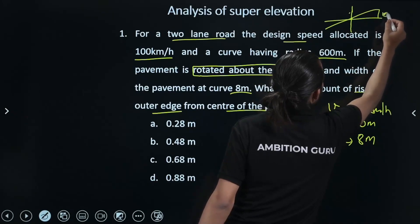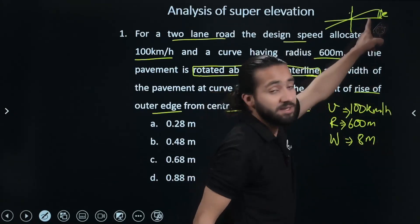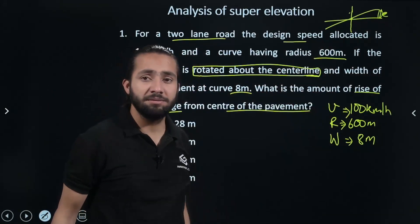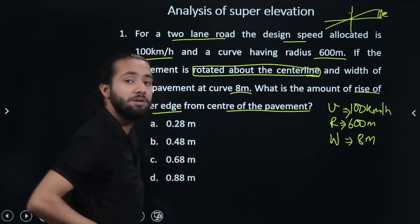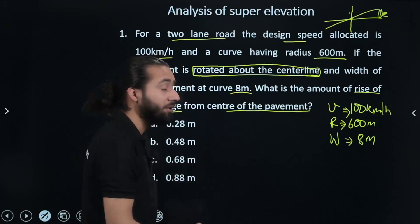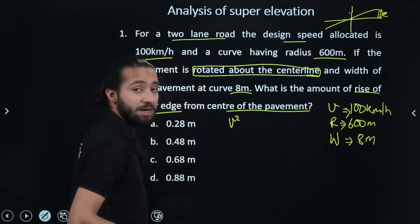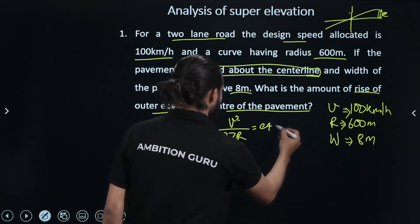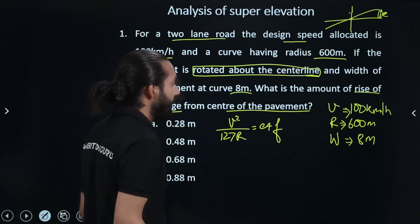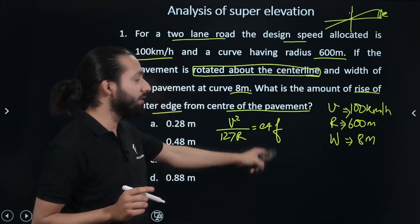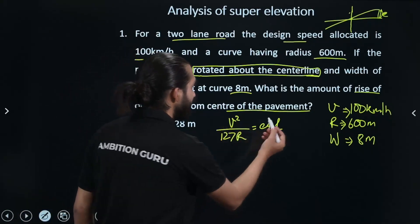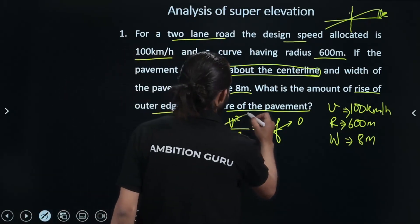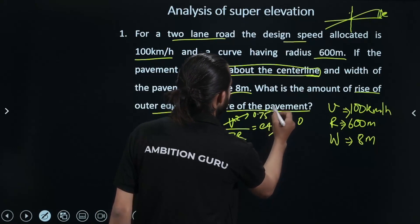The pavement rotates about the center line. The element of the pavement is E. For finding E, we use the formula: E plus friction (f) equals V squared divided by 127R. We neglect friction (f), so E equals approximately 0.75 times V squared divided by 127R. The width B is taken as 0.75B.